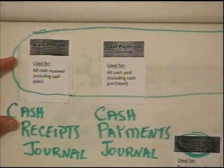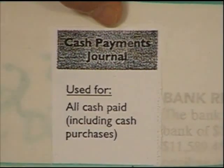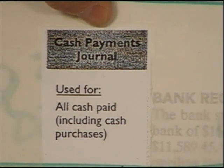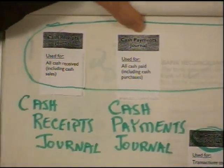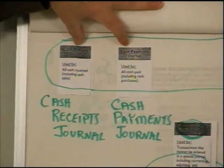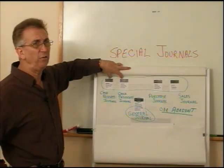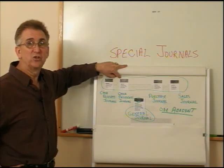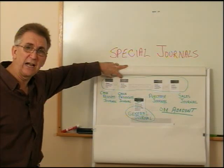The second cash journal would be exactly the opposite — the Cash Payments Journal. It's used for all cash paid, including cash purchases. We use the Cash Payments Journal whenever cash is going out the door. So we have two journals that handle cash: Cash Receipts and Cash Payments. Whenever cash is involved, I don't care what it's for — it's either coming in, Cash Receipts Journal, or going out, Cash Payments Journal.